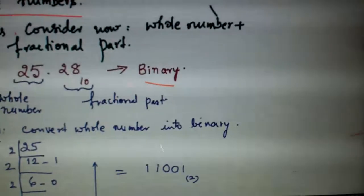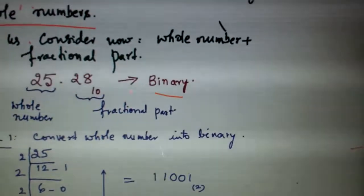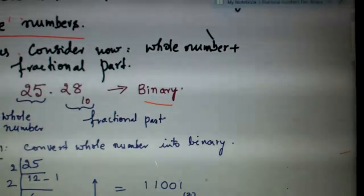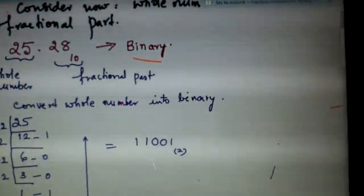What will you do now? Separate the whole number and fractional numbers. The whole number is 25. So by the same procedure as we have done last time, convert the whole number 25 into its binary.